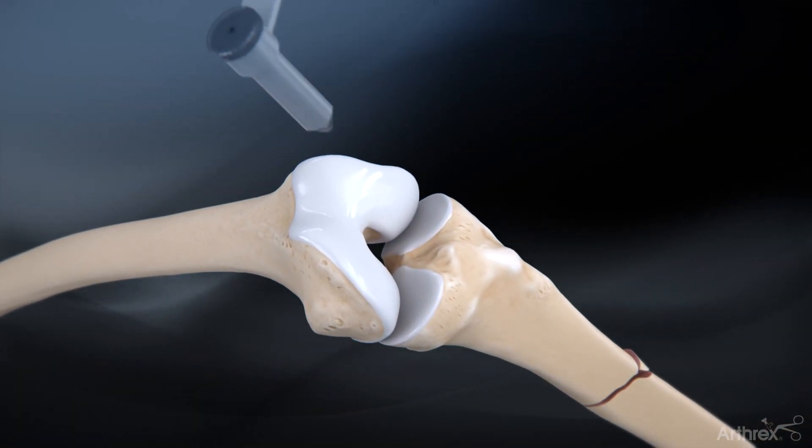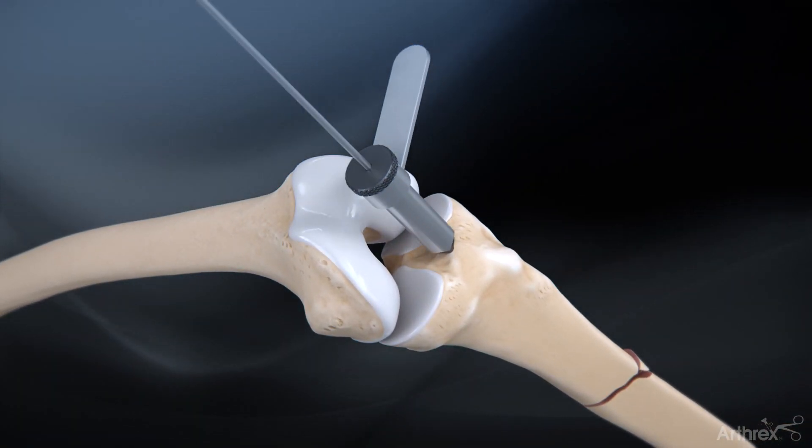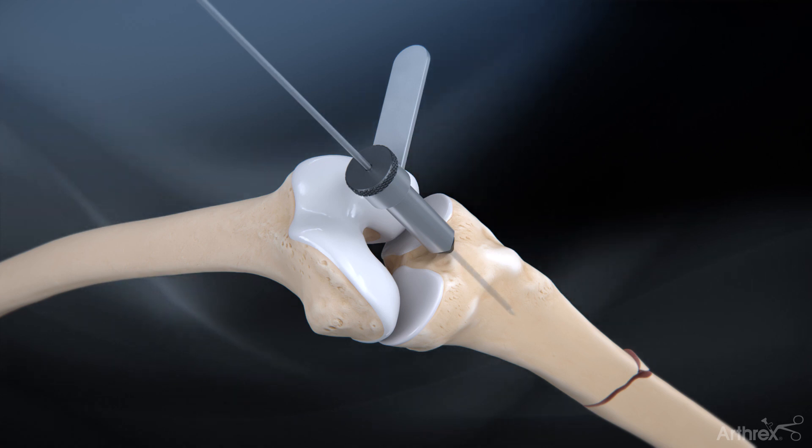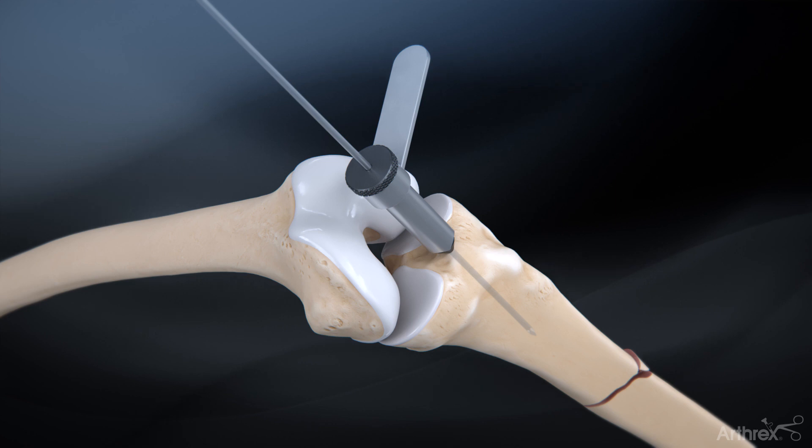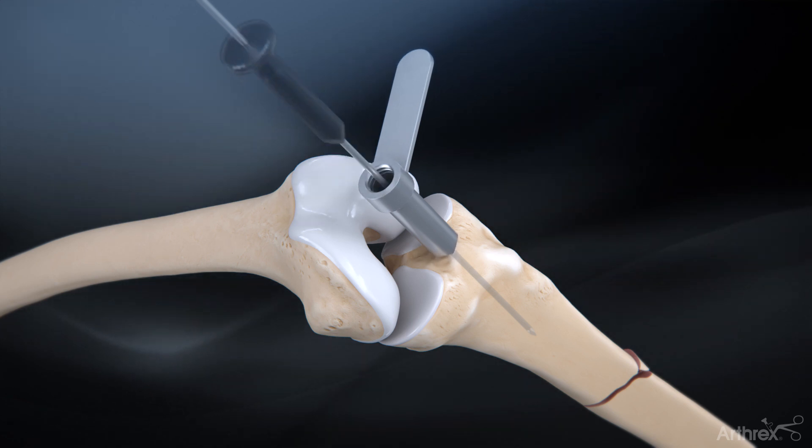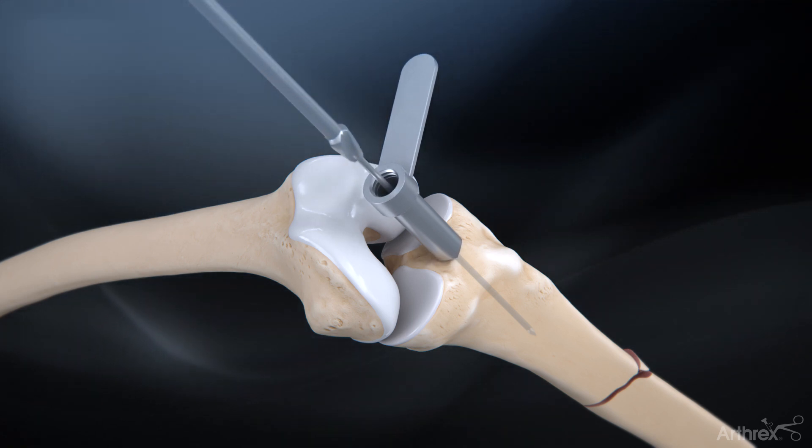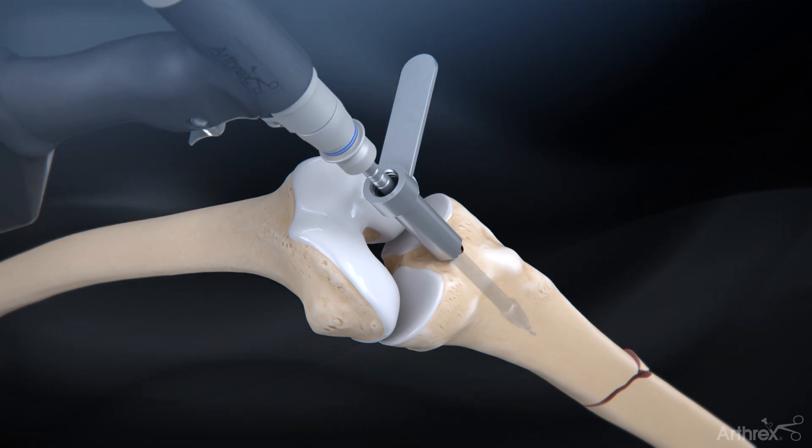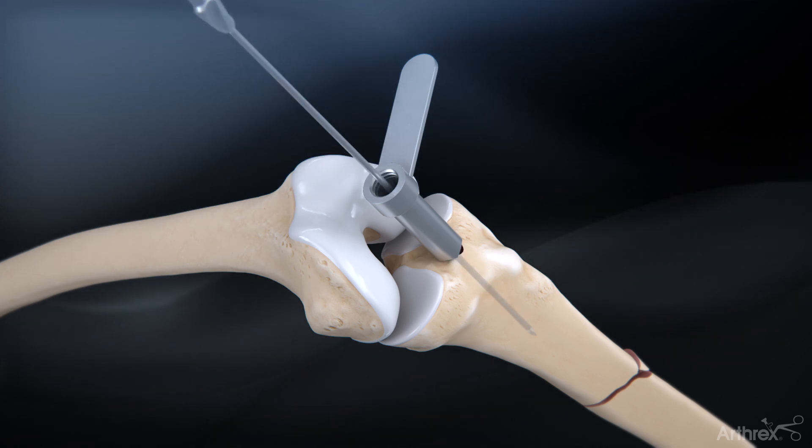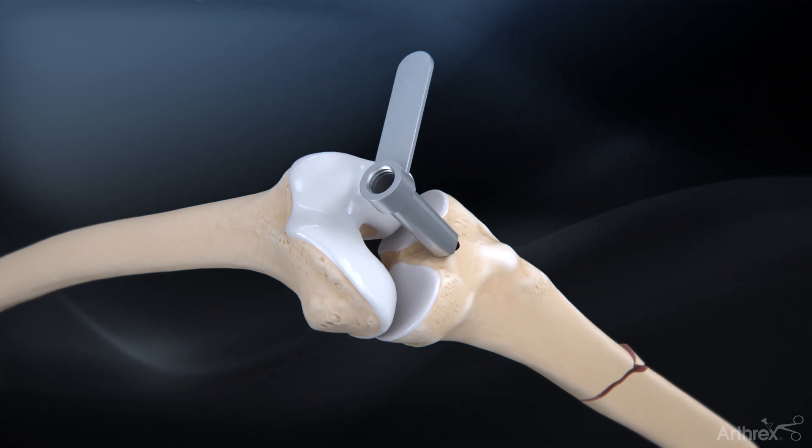Orient the entry tube and pin guide in the desired position. Insert the 3.2 mm guide pin into the proximal tibia so that it reaches the center of the intramedullary canal. Remove the inner pin sleeve and use the 12.0 mm reamer to open the canal. Remove the 3.2 mm guide pin.